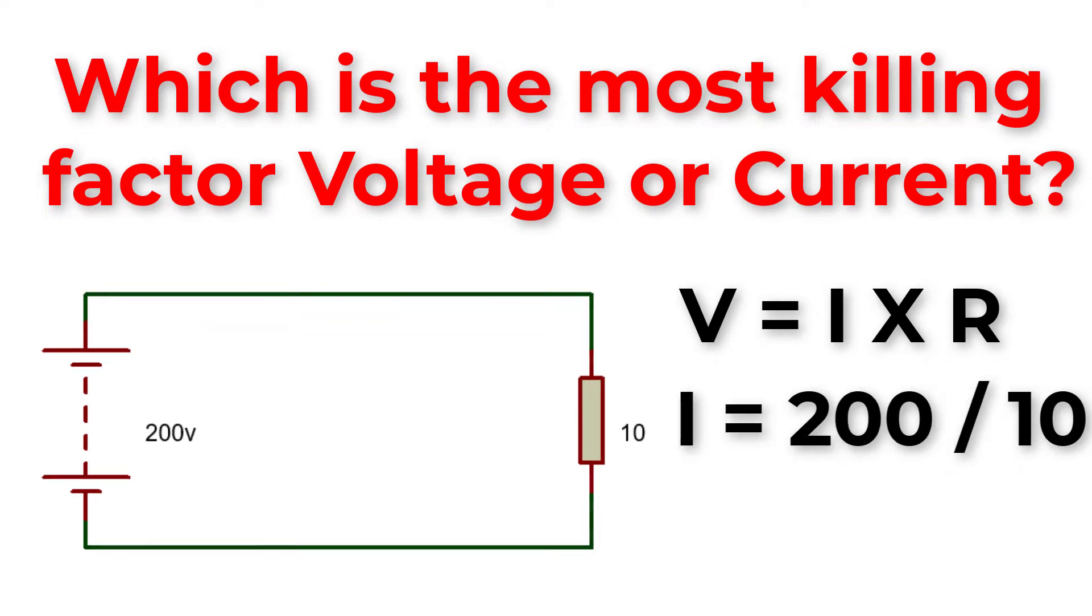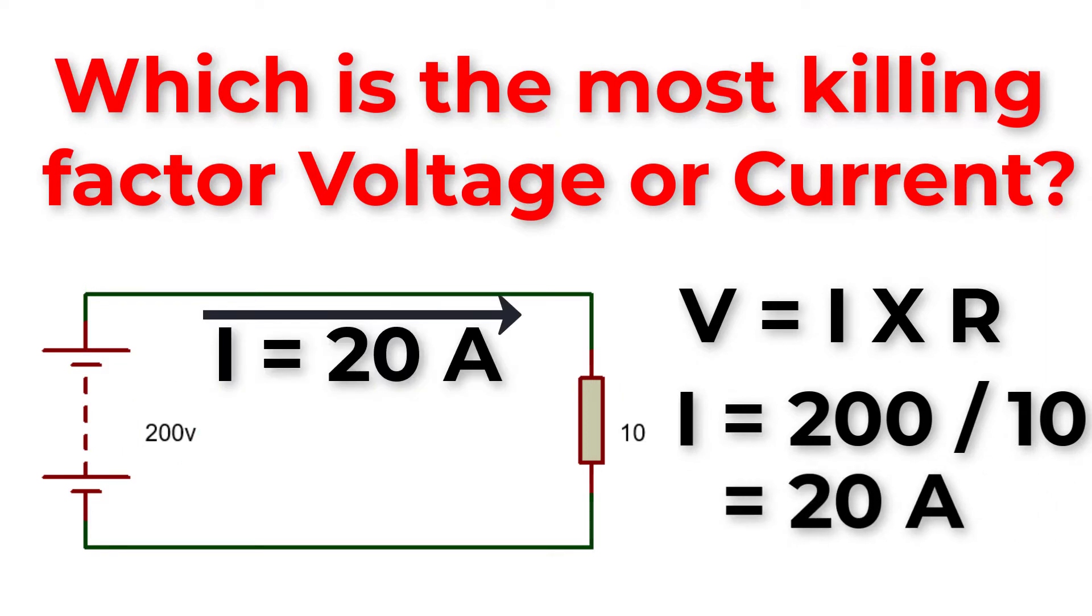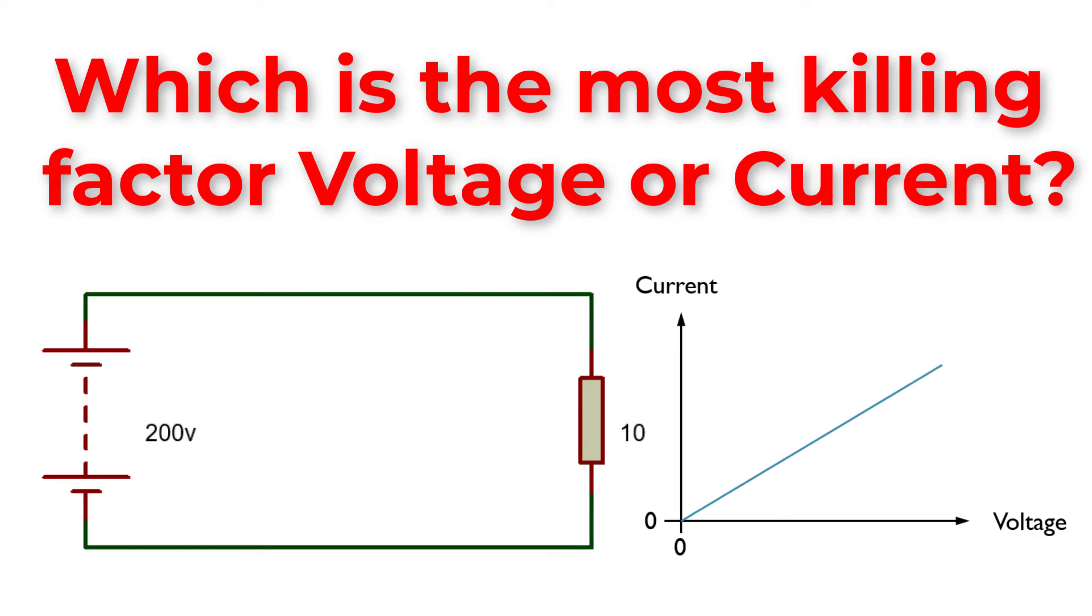But if we increase the voltage to 200V for example, 20A will flow through the circuit. So as we increase the voltage for the same resistance, this will force more current to flow through the circuit.